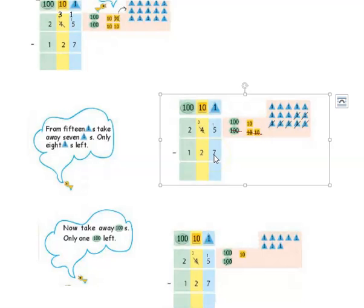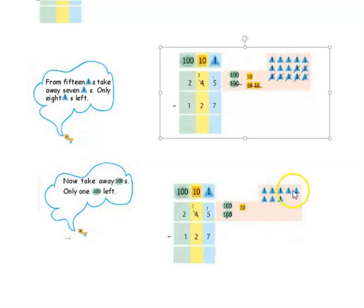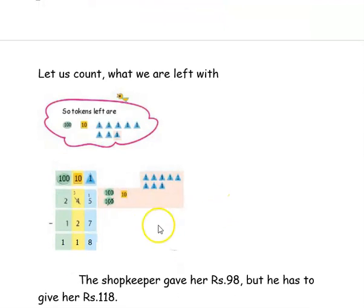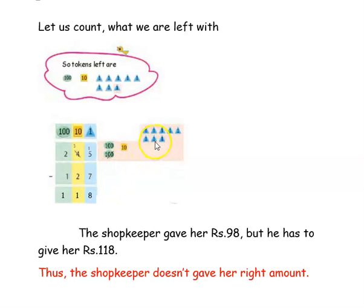Now we will do the subtraction — the take-away process. We want to take away 7 ones from 15 ones, so we strike out 7 ones from these 15 ones. Next, we have to strike out 2 tens from the 3 tens. Then we have to strike out 1 hundred from the 2 hundreds. Now we see what is left. We are left with 8 ones, 1 ten, and 1 hundred. So I have written 8 in the ones column, 1 in the tens column, and 1 in the hundreds column.